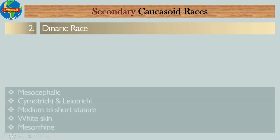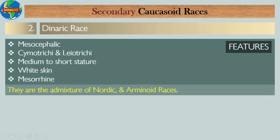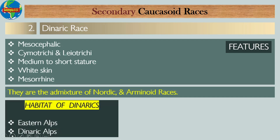Number two: Dinaric race. The features of the Dinaric race include: they are mesocephalic; they have cymotrichous or leiotrichous hair; they have medium to short stature; they are white-skinned; and they are mesorhine. They are an admixture of Nordic and Armenoid races. The habitat of the Dinarics includes the Eastern Alps and the Dinaric Alps of Europe.